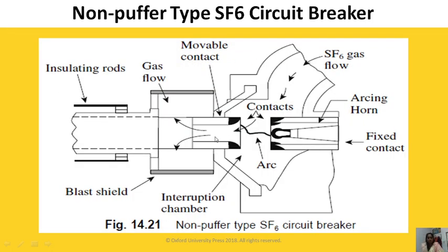In the non-puffer type, the fixed contact and moving contact are present. As soon as a fault occurs, the relay gives a tripping signal to the circuit breaker, the contacts open, and an arc forms. SF6 gas comes from the reservoir and quenches the arc. The gas exits through the rectangular holes provided on the movable contact, which serve as outlets for gas flow.